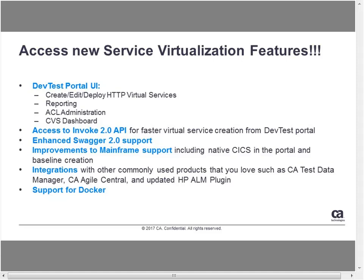The next feature involves the DevTest portal using new enhanced APIs, which allow us to create virtual services faster than before. There's enhanced Swagger 2.0 support, which enables you to use your Swagger doc or Swagger spec to create tests and app tests as well as virtual services. We also support internal and external references. Additionally, we've made improvements to our CRCS support and the ability to create some baseline tests based on that.